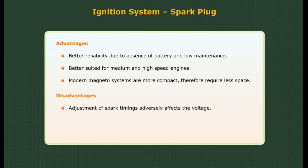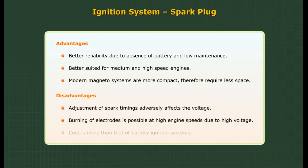Disadvantages of magneto ignition system: Adjustment of spark timings adversely affects the voltage. Burning of electrodes is possible at high engine speeds due to high voltage. Cost is more than that of battery ignition systems.